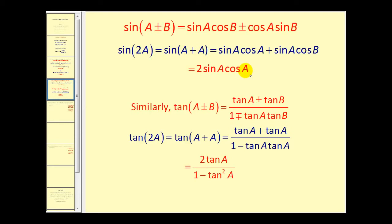And lastly for tangent, we'll use the sum identity again with angle A plus angle A, and we can obtain two tangent A over one minus tan squared A. It's pretty straightforward, but you may want to pause the video and look at it more closely.